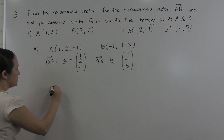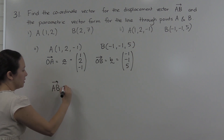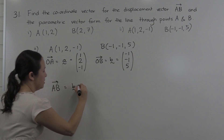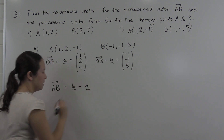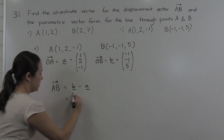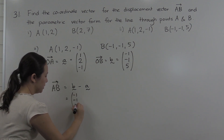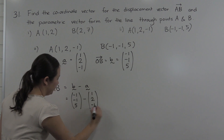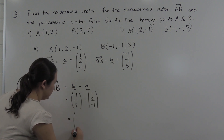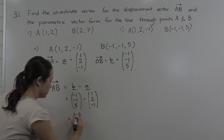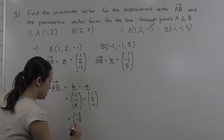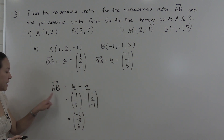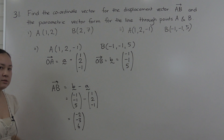When they ask us for the vector AB, that's the position vector of the tip minus the position vector of the tail. So that's (-1, -1, 5) minus (1, 2, -1). This gives us: -1 minus 1 is -2, -1 minus 2 is -3, and 5 subtract -1 is 6. So the vector AB is the column vector (-2, -3, 6).